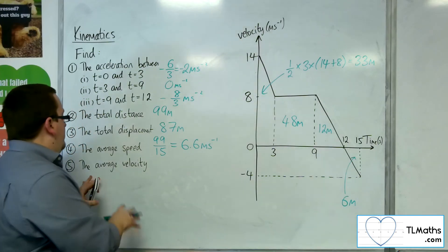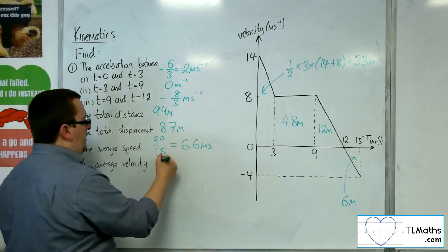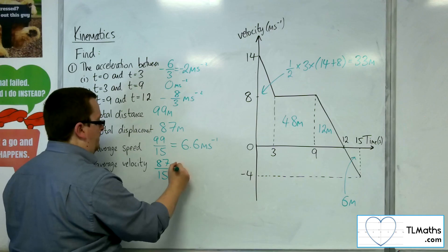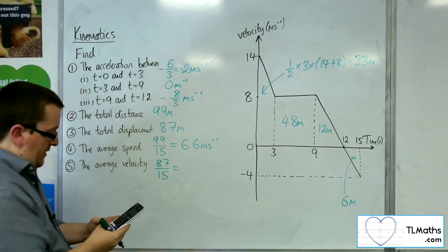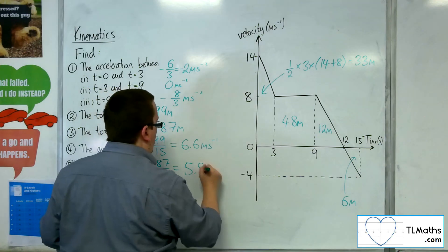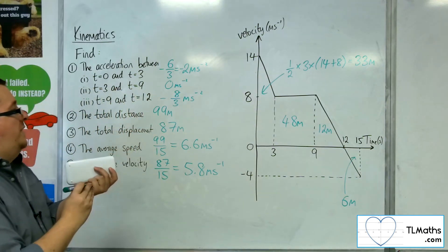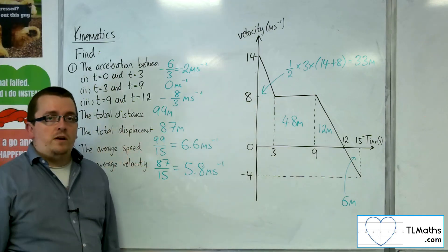So then the average velocity is the total displacement divided by total time. So we've got 87 divided by 15, and that gets us 5.8 metres per second. So that's how we can answer some questions about a velocity time graph.